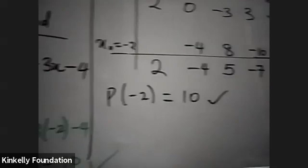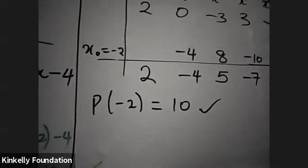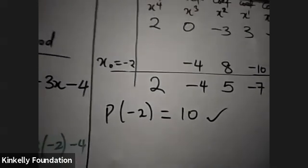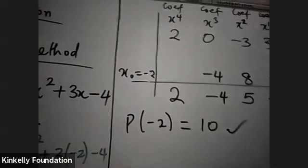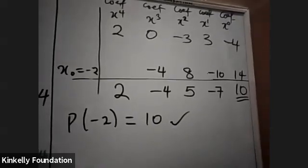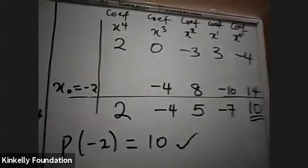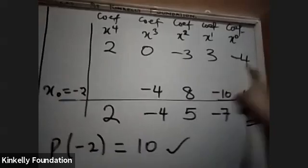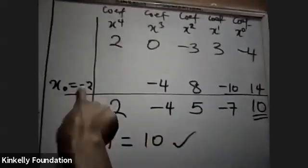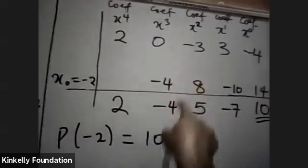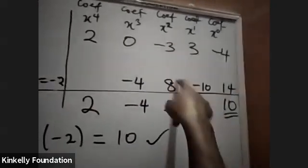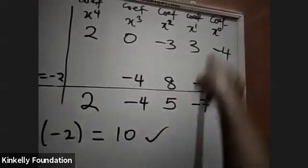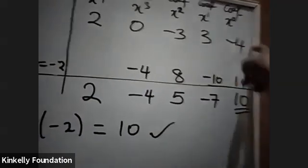So, once you are told to use Horner's method, you use it directly and you're going to get the same thing. To recap: the coefficients of the variables are written out first, then you bring down the first coefficient. This times s₀ gives you this; you add, you have this. This times s₀ gives you this; you add, you have this. This times this gives you this; you add, you have the final answer.